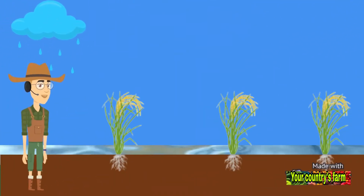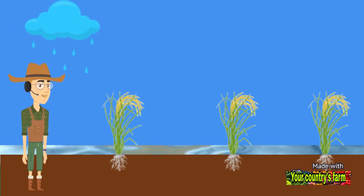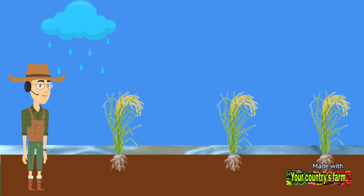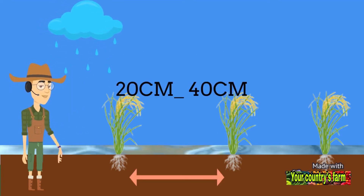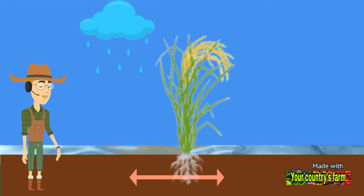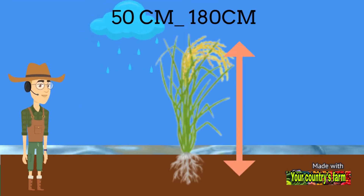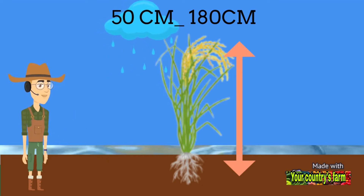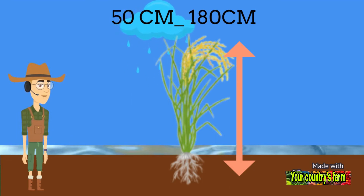The rice plant is a herbaceous plant belonging to the grass family. Rice is about 50 to 180 centimeters tall. The fruit grows on the air. The root system is fibrous and superficial, and spreads in watery rice varieties horizontally up to a distance of 20 to 40 centimeters, while the roots of highland varieties spread deep into the soil. The stem is upright and hollow, and its height ranges between 60 and 180 centimeters. On the main stem, many tillers form in fertile and irrigated soils, the number of which may reach 50.